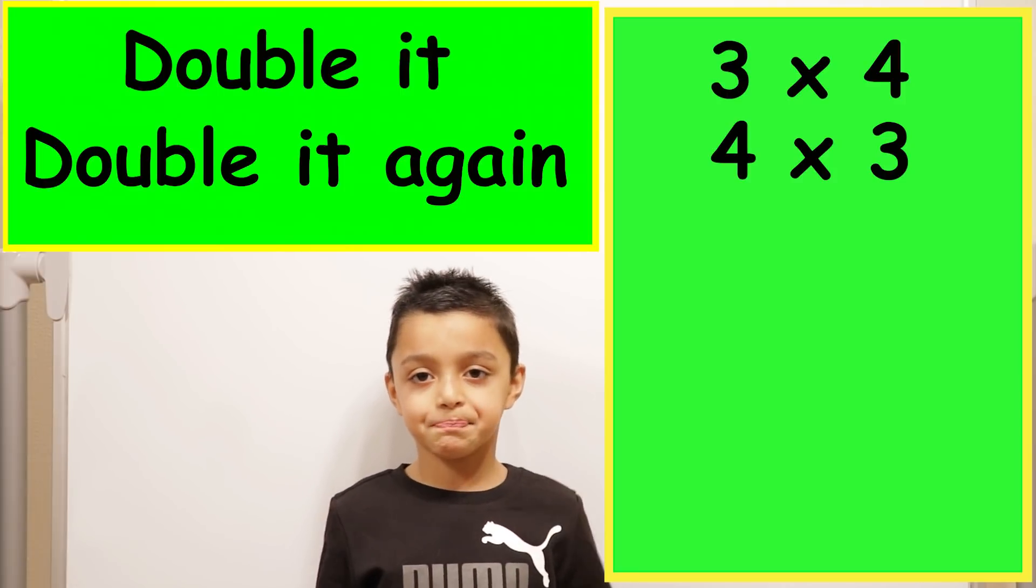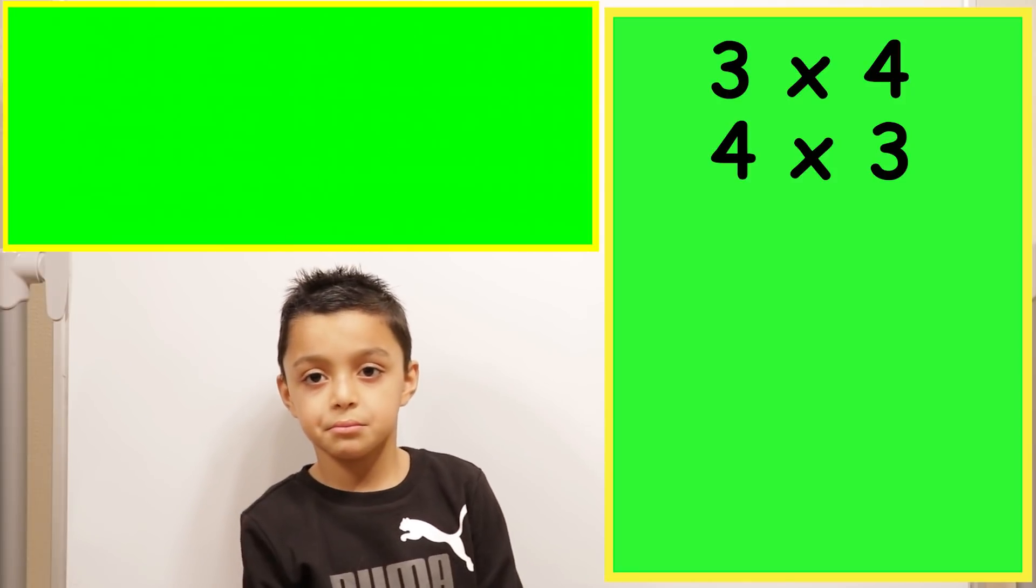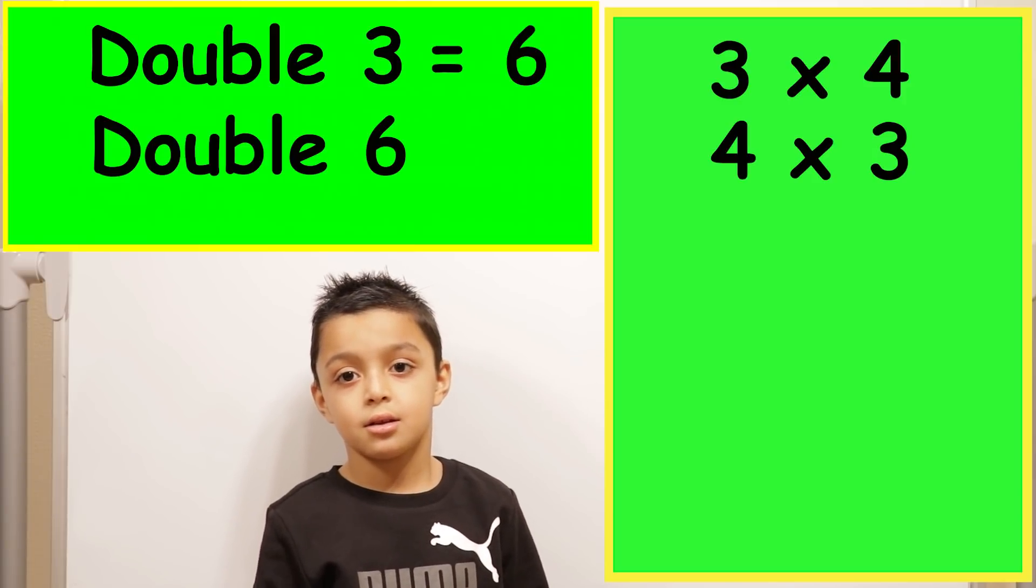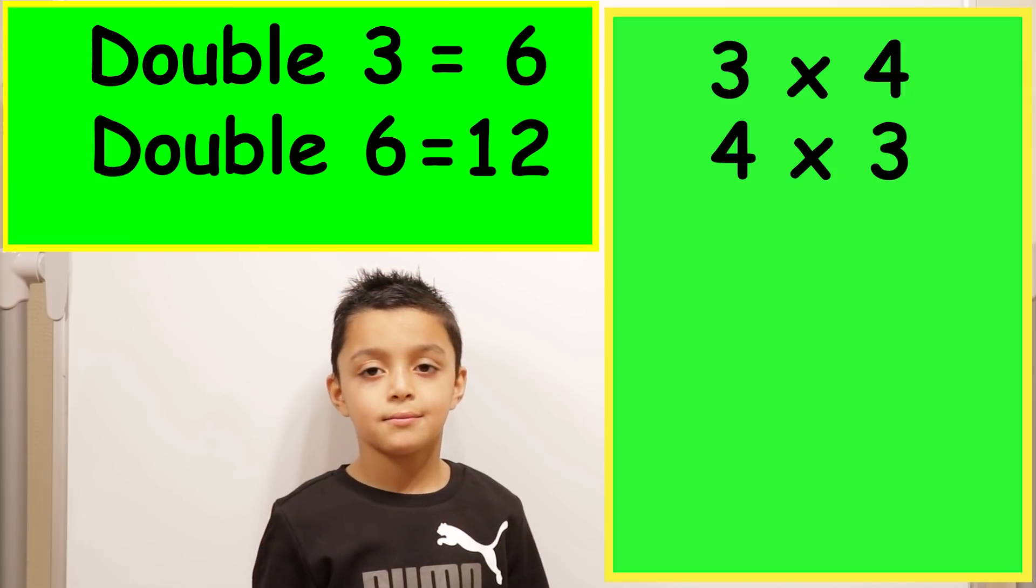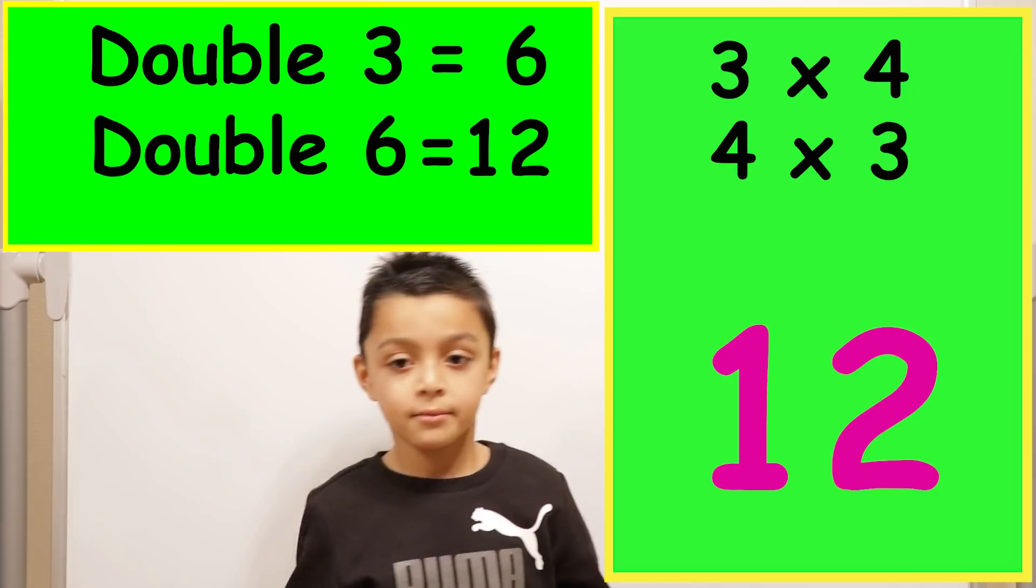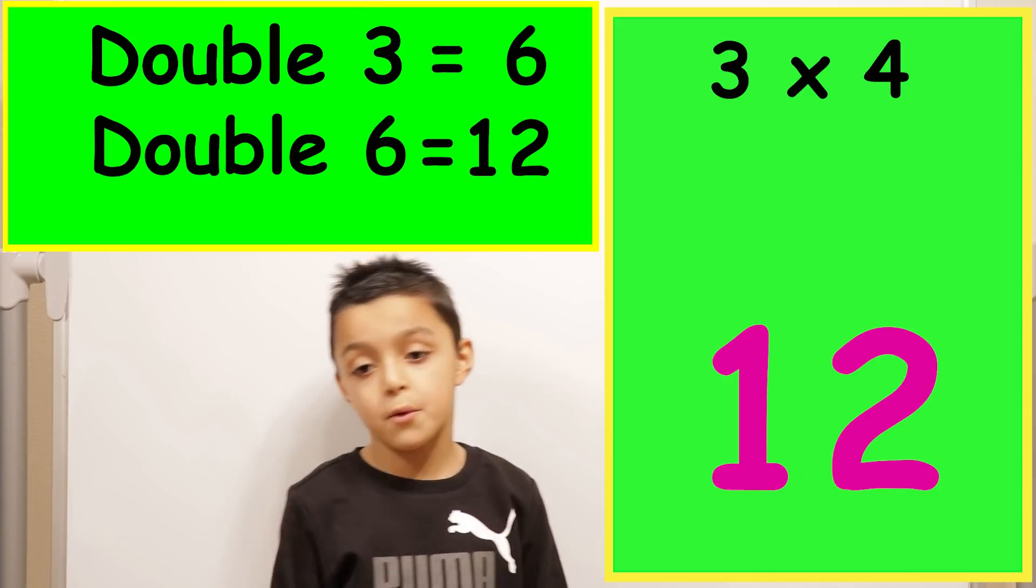So if we do four times three, let's double the three. Six. And then let's double that number again. Twelve. Twelve. So four times three equals twelve, which is the same as three times four. Okay, good. Look at the camera. Very good.